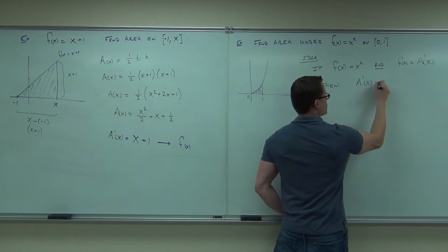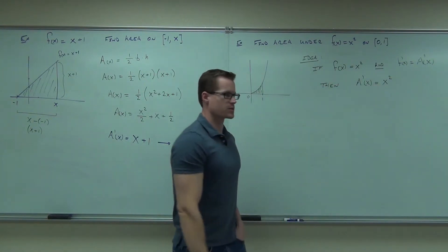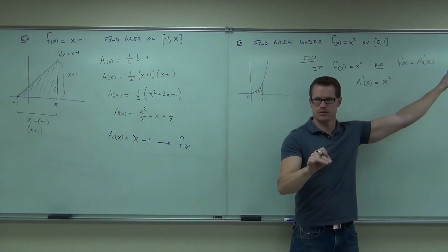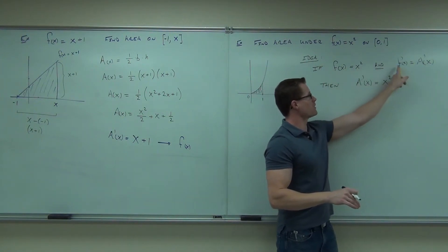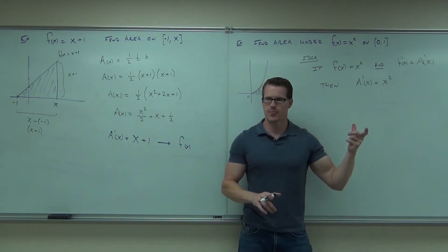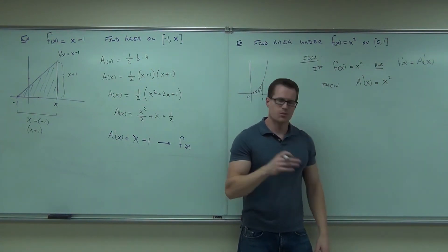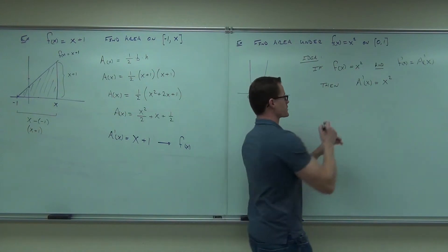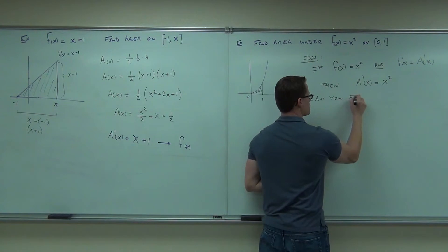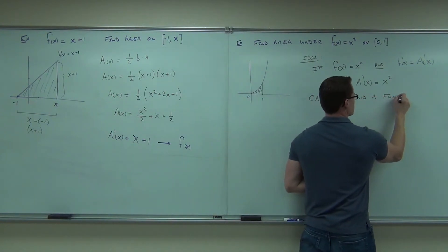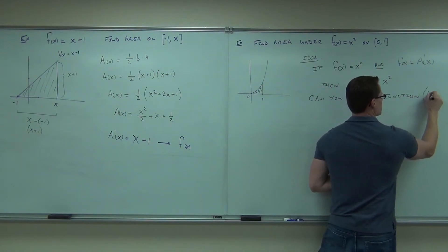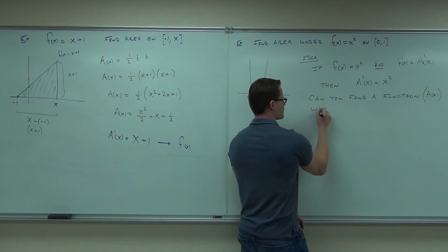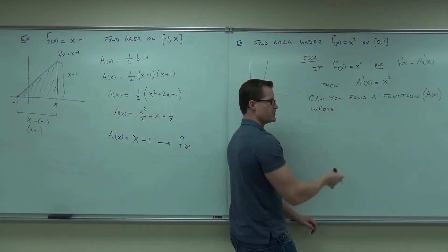The first derivative of our area function equals x squared — that's a basic substitution. It says if our function is x squared, and we know that a function equals the first derivative of its area function, then if f(x) is x squared, we can ask: can you find a function A(x) whose derivative is x squared?